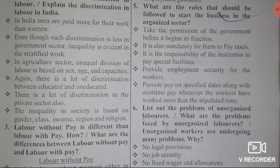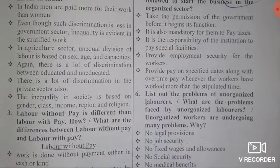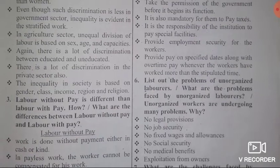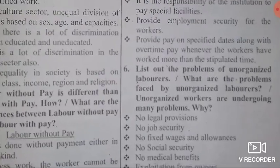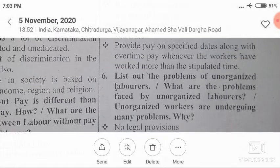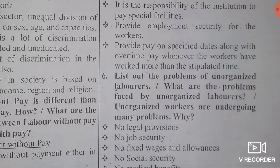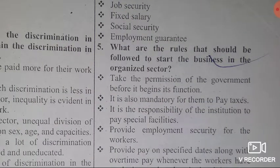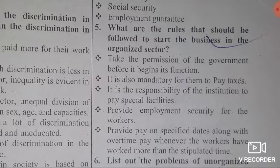It is the responsibility of the institution to provide special facilities. Provide employment security for the workers. And the last rule is to provide pay on specified dates along with overtime whenever workers have worked more than the scheduled time. These are the rules and regulations to be followed to start any type of business in the organized sector.